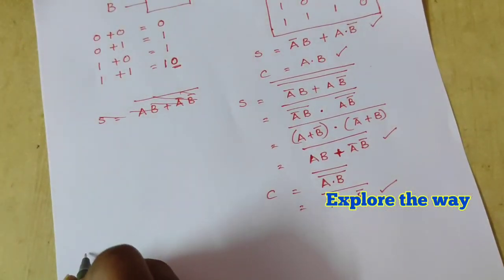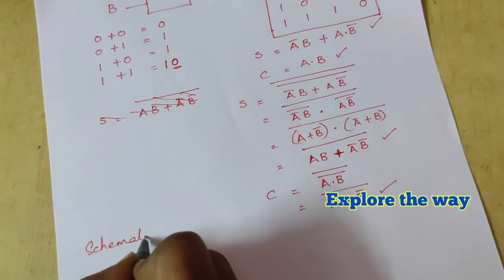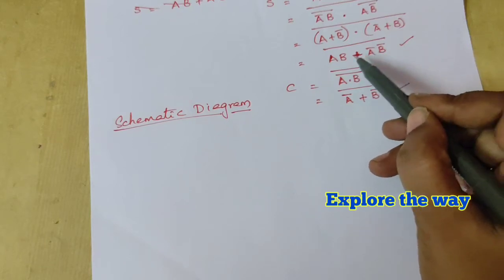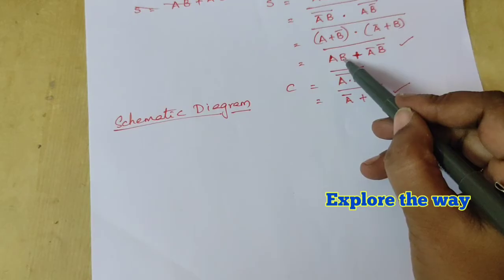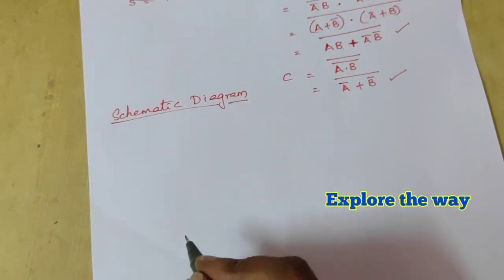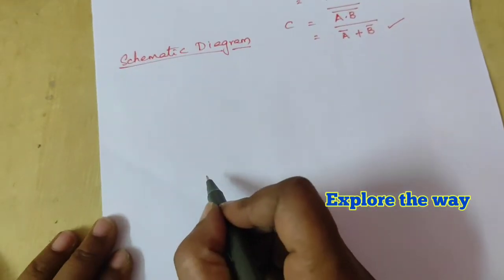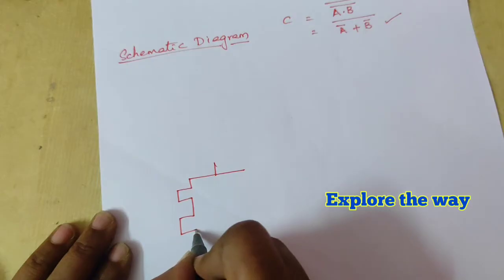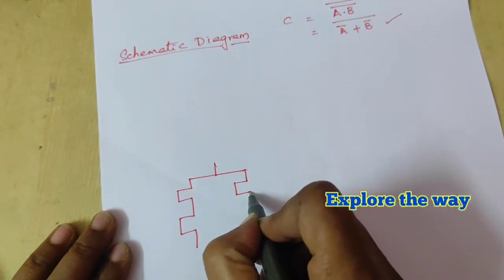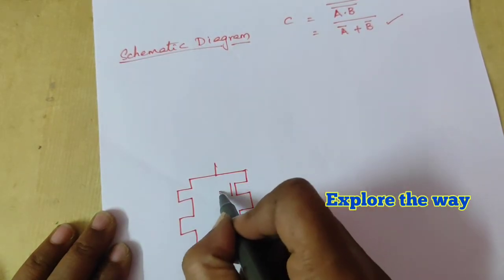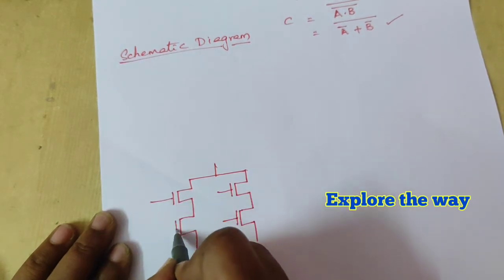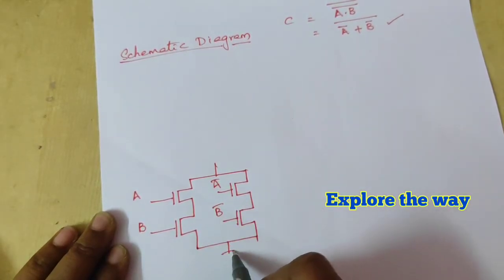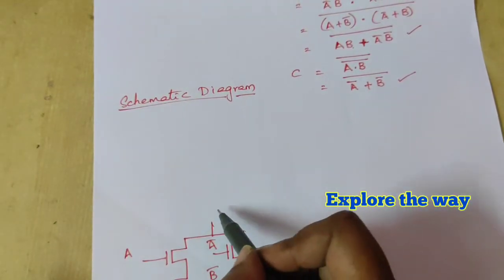Now we implement the schematic. For the sum function, which has AB + A-bar·B-bar in the pull-down network: transistors A and B are connected in series, and A-bar and B-bar are also connected in series. These two series combinations are connected in parallel in the pull-down network.